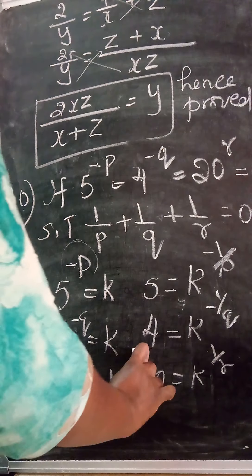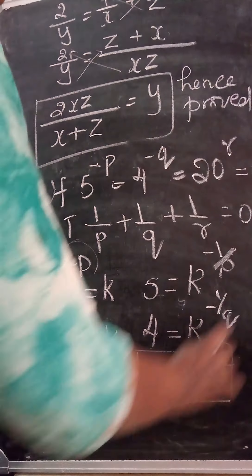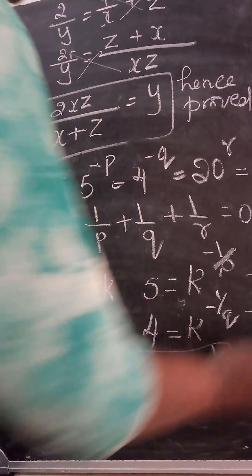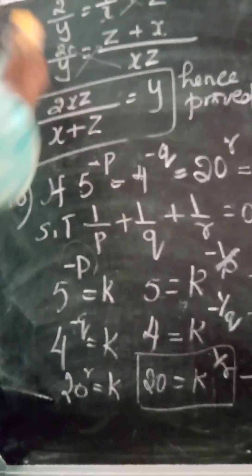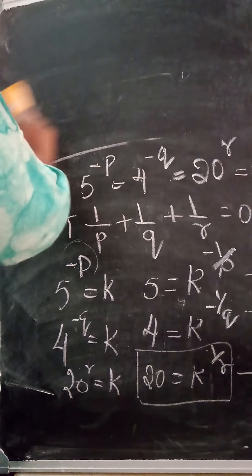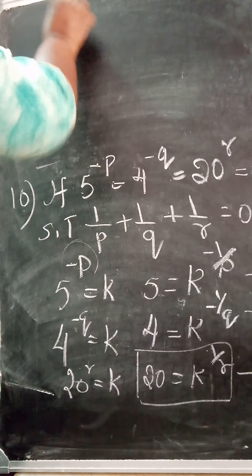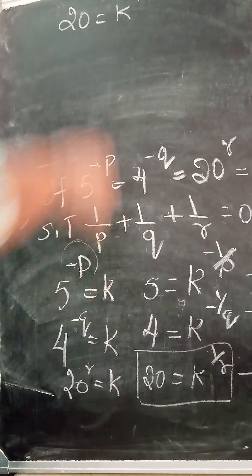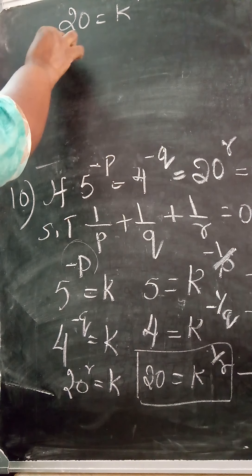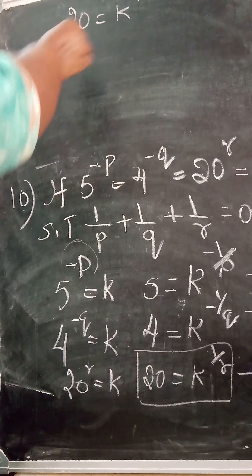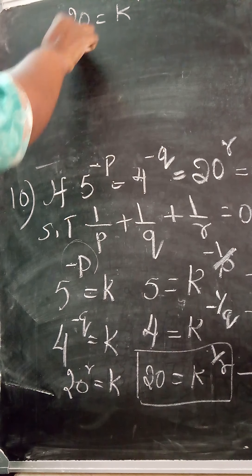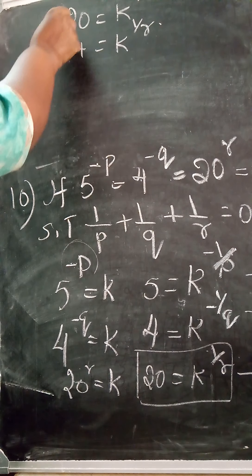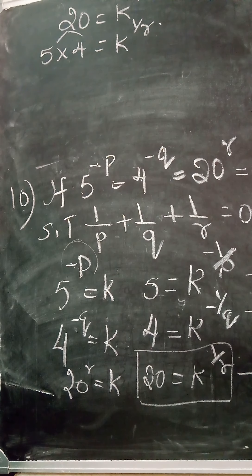We will take the third equation: 20 = k^(1/r). I can write 20 as 5 × 4. This is equal to k^(1/r). I have split 20 as 5 × 4. Now from equation 1, what is 5? It is k^(-1/p).